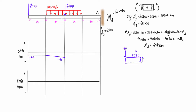When we extend our free body diagram just to the right of the next marker, we have to include the 20 kilonewton point load. So we have 20 going down, 20 going down, and 10 going down — a total of 50 kilonewtons pressing down. The shear must be 50 kilonewtons pressing up, which is negative, so we drop down to negative 50 kilonewtons just to the right of this point load.